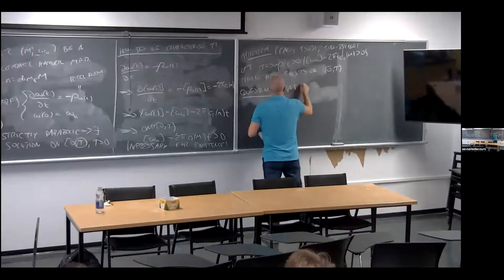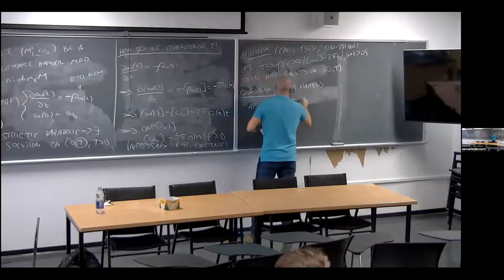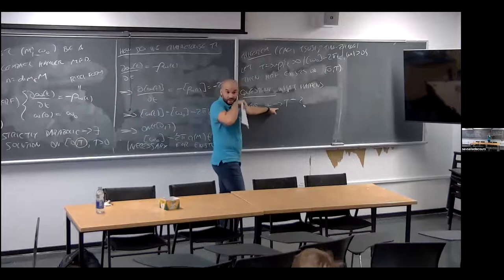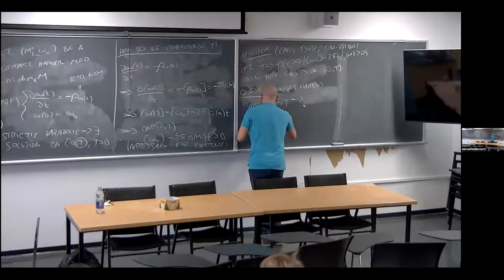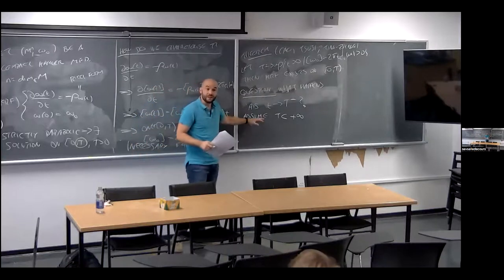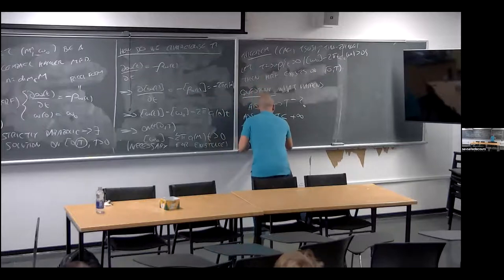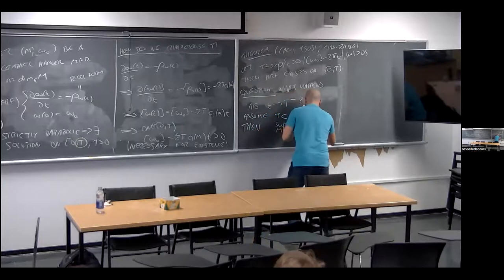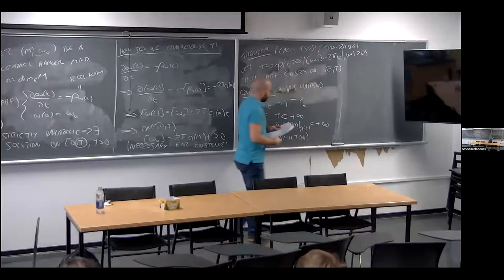Given that we know the maximal time of existence, the question is: what happens as we approach this time? We assume T is finite — so we're dealing with finite time singularities. We know from Hamilton's work that a finite time singularity is characterized by the curvature blowing up: sup|Rm| → +∞ as t → T.